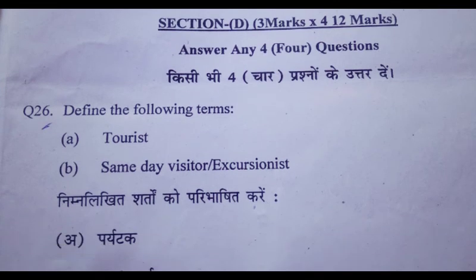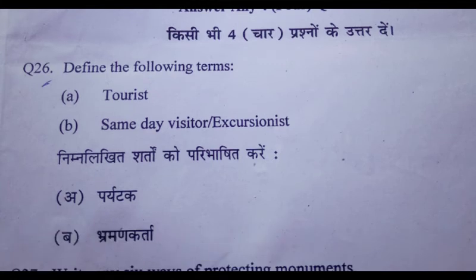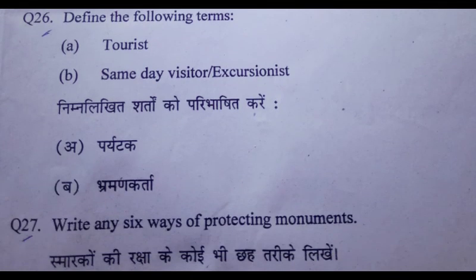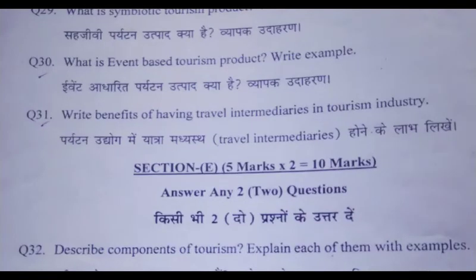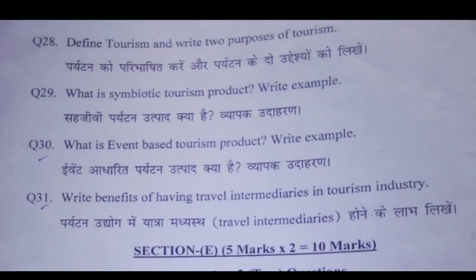Section D: Give answer to any 4 questions. Question 26: Define the following terms — tourism product, tourist, same-day visitor, and excursionist. Question 27: Write any 6 ways of protecting monuments. Question 28: Define tourism and write the purpose of tourism. Question 29: What is a symbiotic tourism product? Write an example.